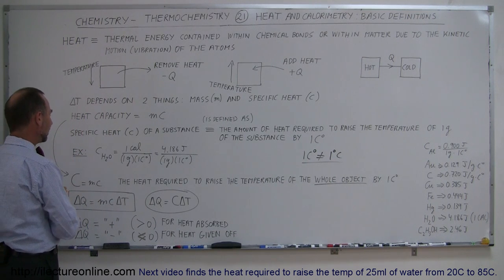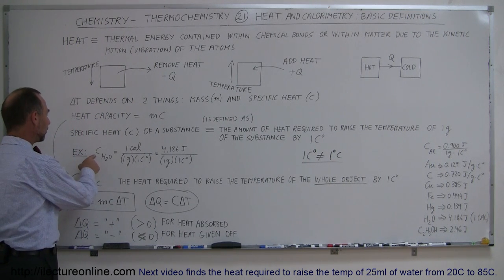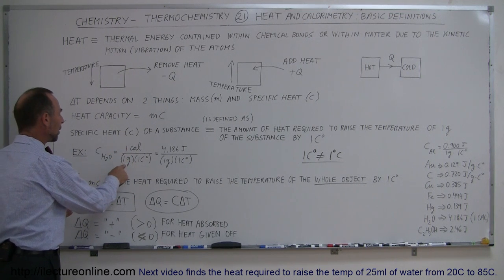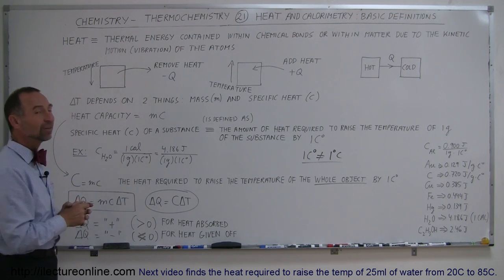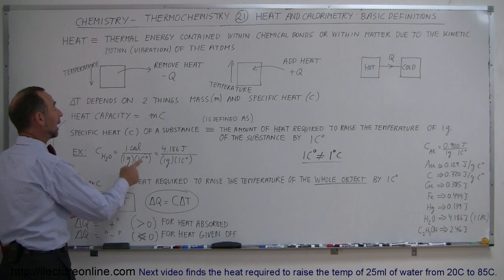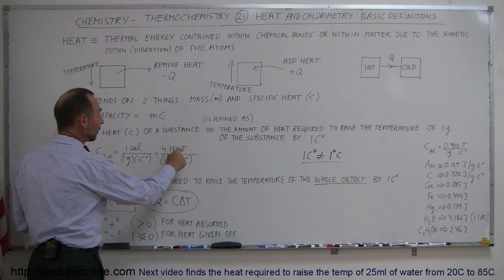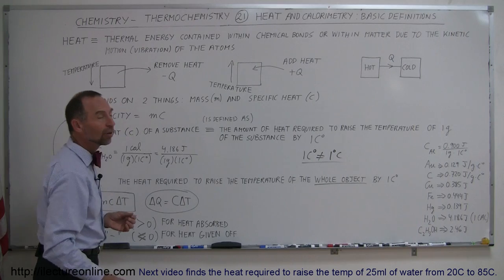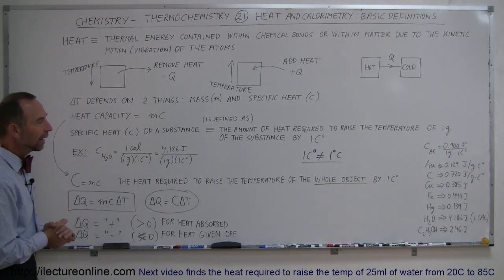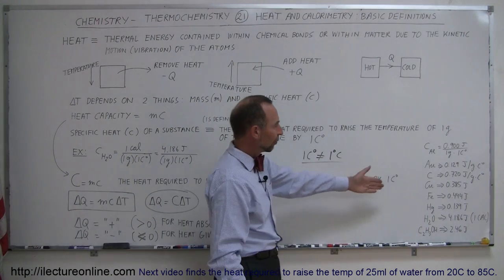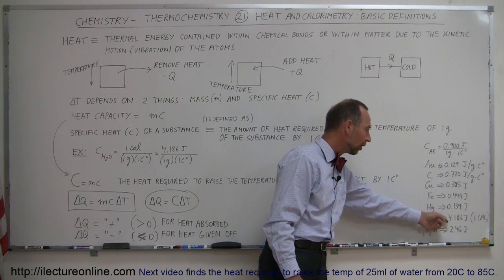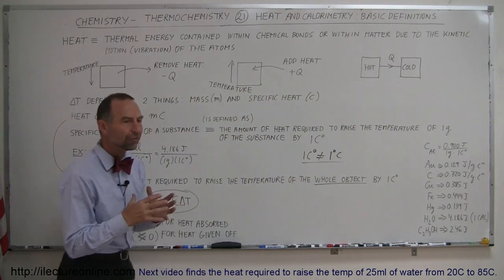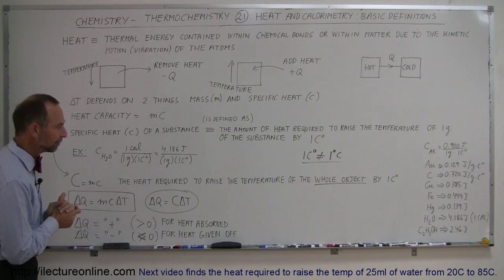The specific heat for water is equal to one calorie per gram per centigrade degree, or equivalently 4.186 joules per gram per centigrade degree. For all other substances besides water, the specific heat is usually less. Water has the greatest heat capacity of just about any substance we know of.